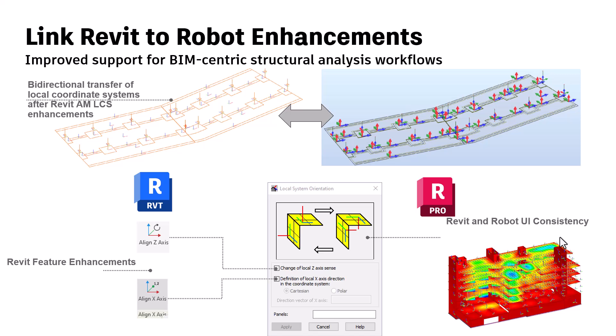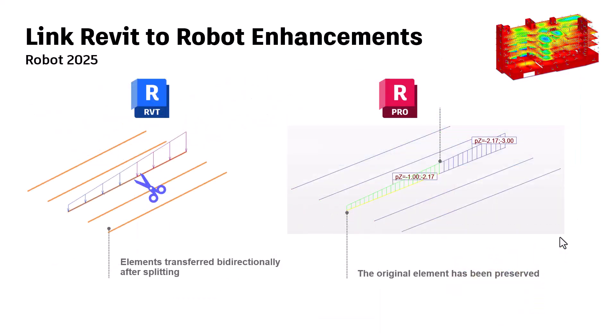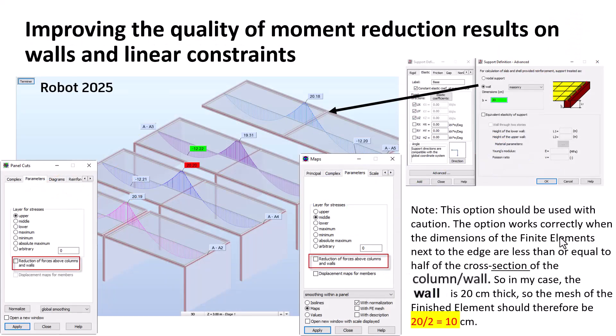In the Revit link enhancement, now you have all local coordinate system matching between Revit and Robot. When you cut an element and split the load, all will be transferred and preserved in bidirectional elements.